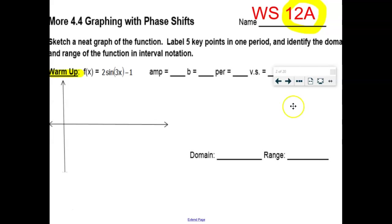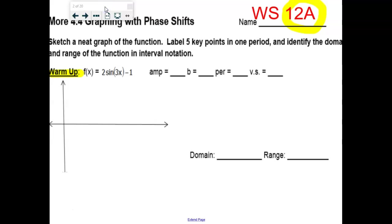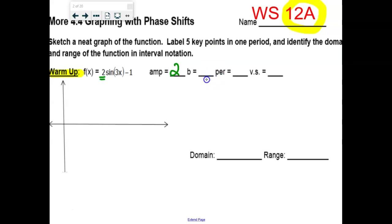So this is a warm-up question. You did a really nice job coming up with the basic sine and cosine graph on your unit circles, but let's do this as a warm-up. The amplitude is the absolute value of the number in front — very closely associated with what you used to call a vertical stretch. The amplitude is 2. The B value is inside of the sine and cosine function, in front of the variable.